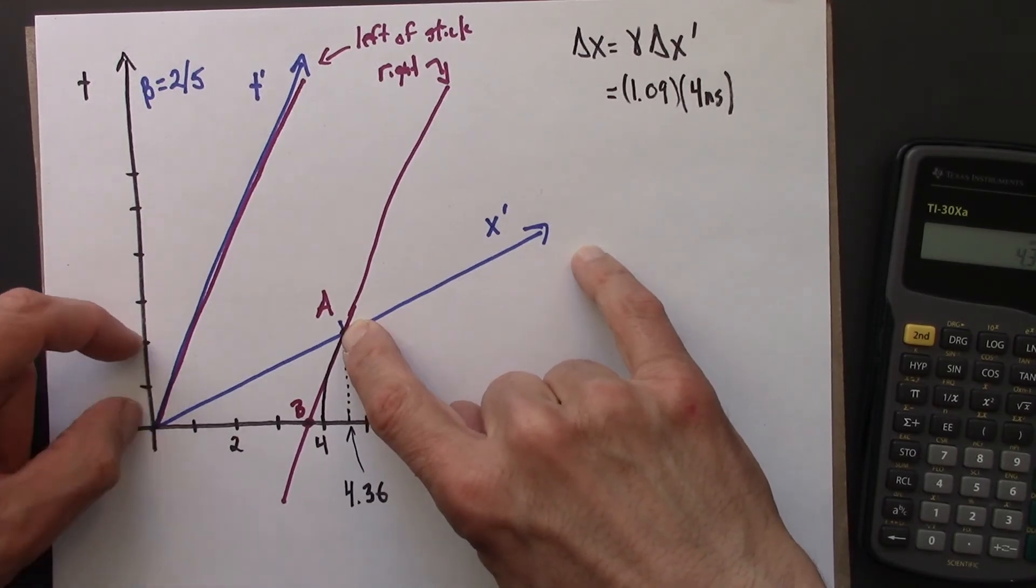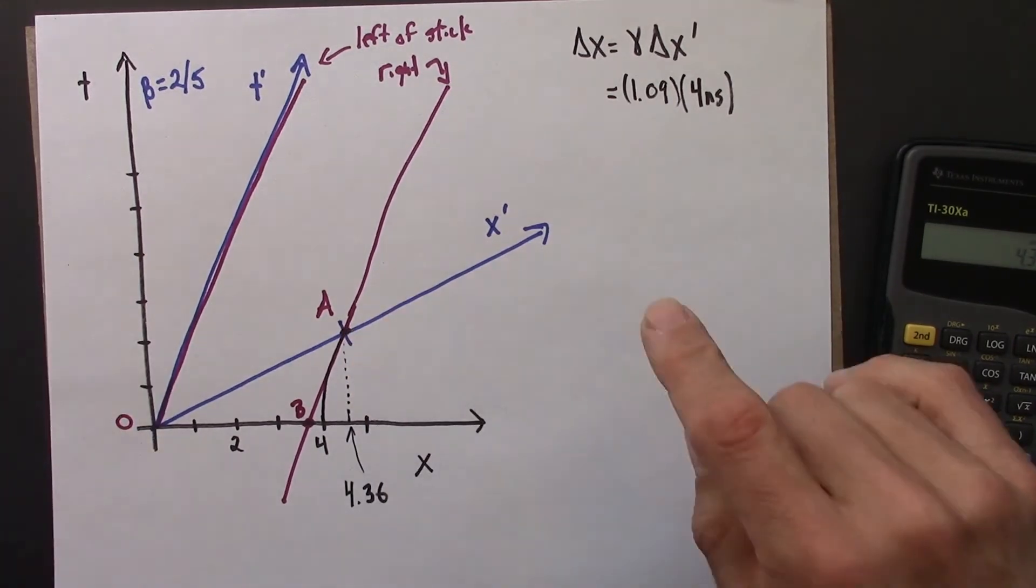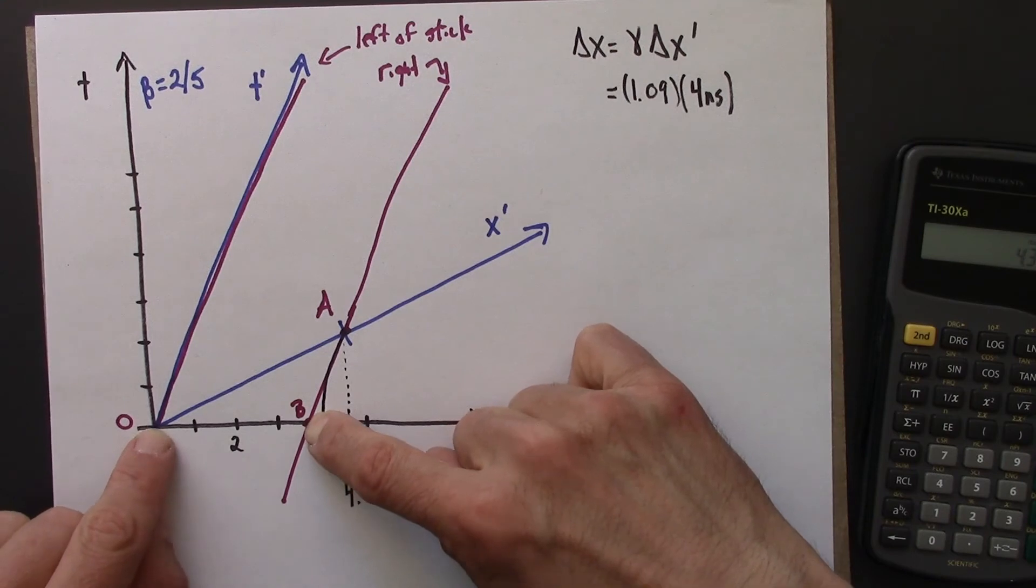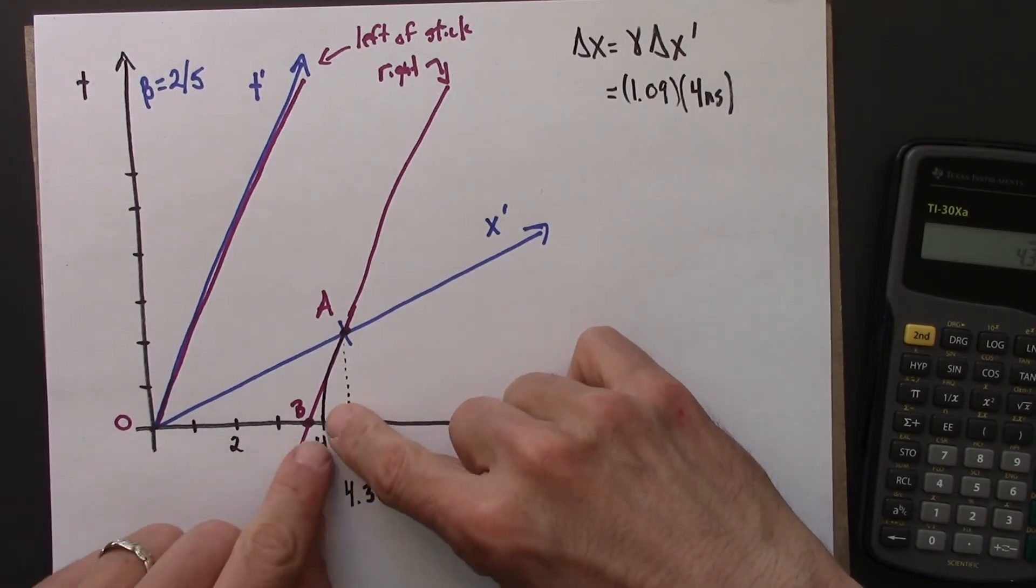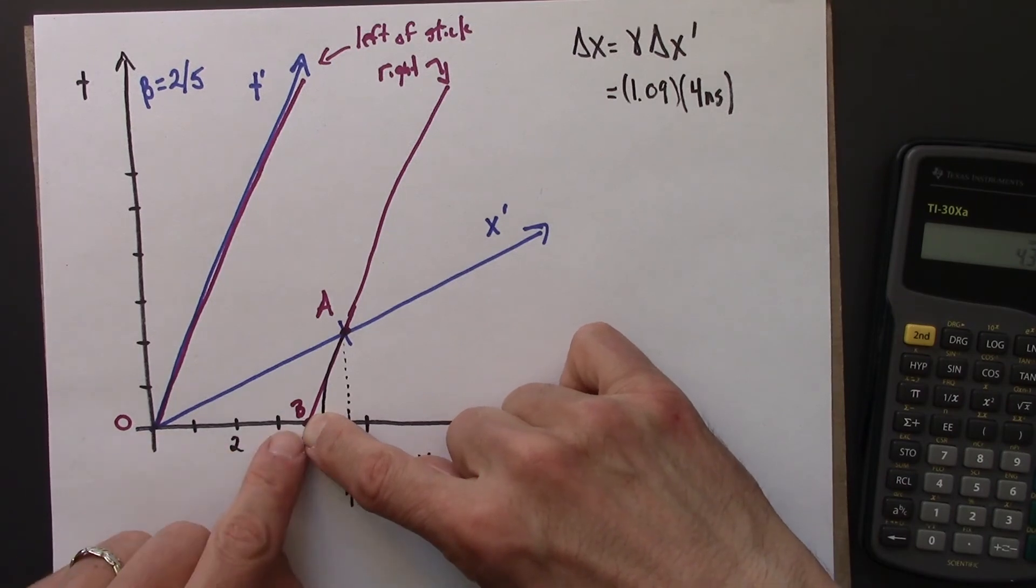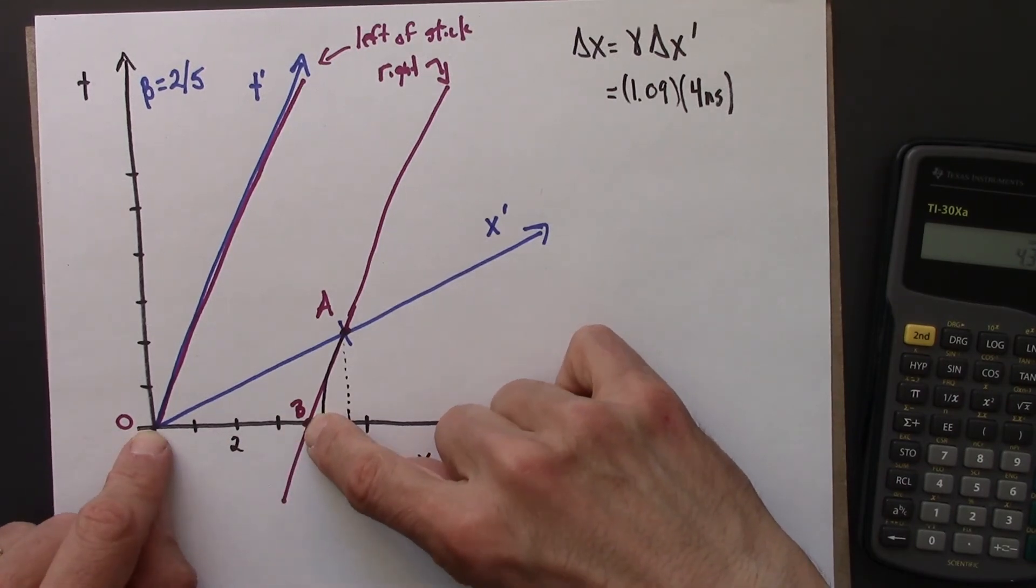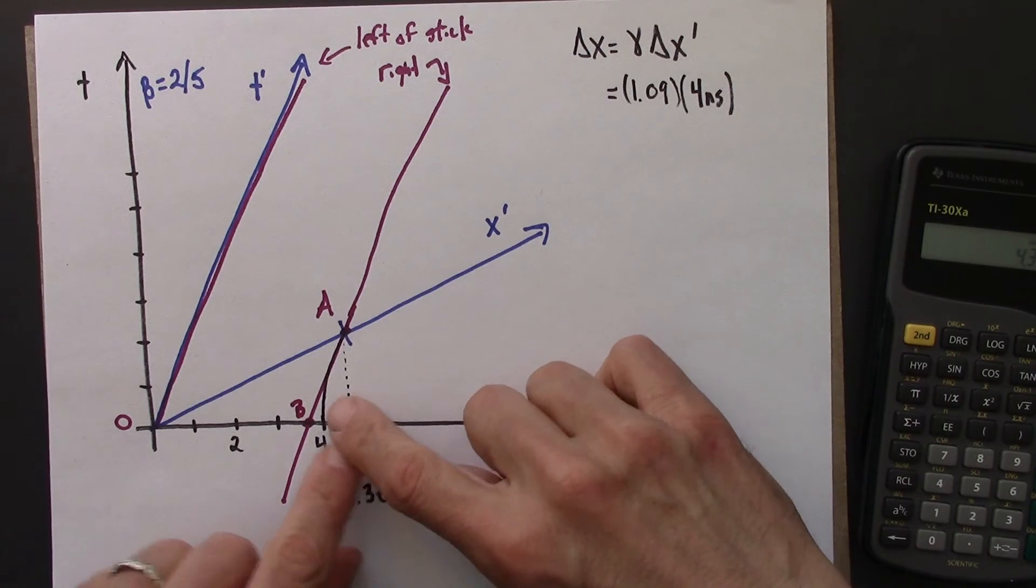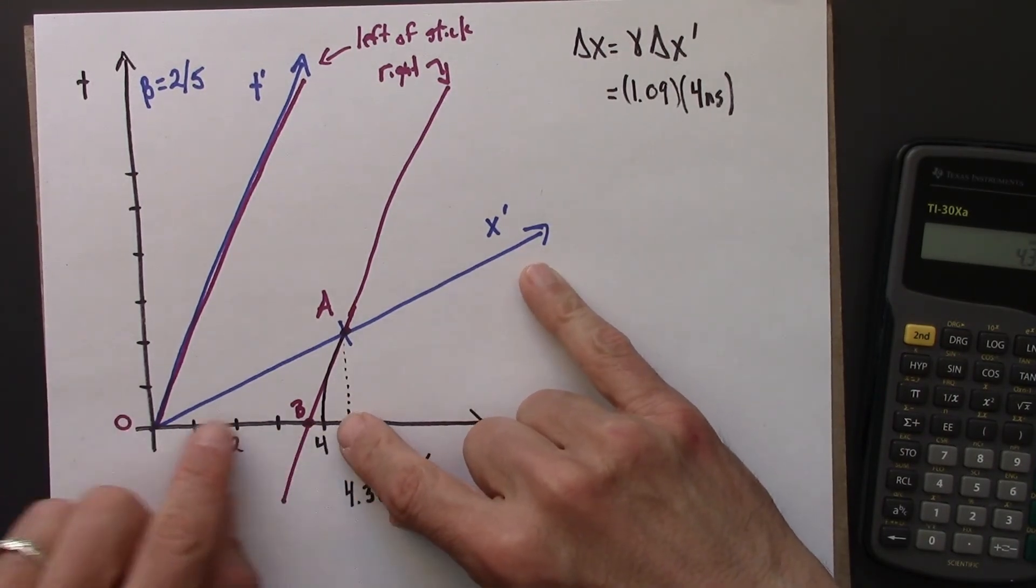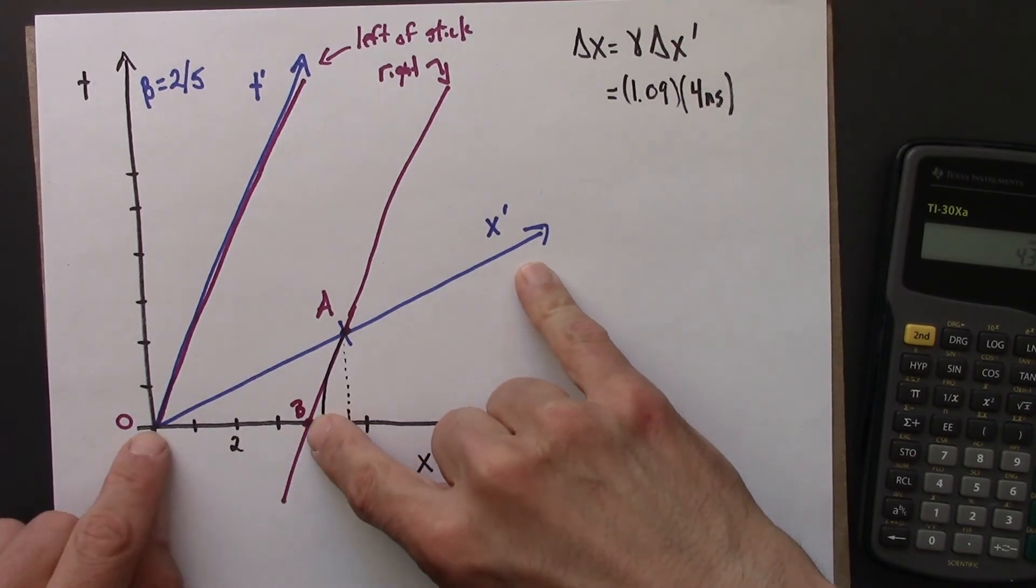But these two events, event O and event B, are simultaneous in Anna's frame. So we can see that in Anna's frame, the length of the moving stick is shorter. We might have thought it would be longer, but it's actually shorter. So this gives us a qualitative result, and it sure looks like it's going to be about 3.67.